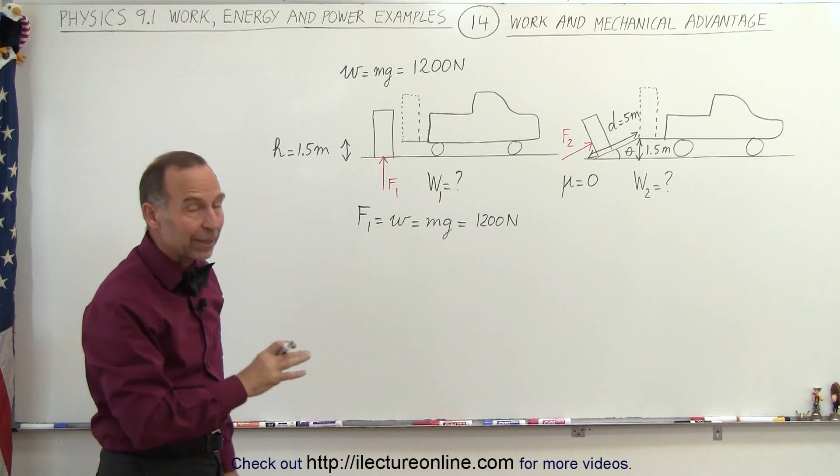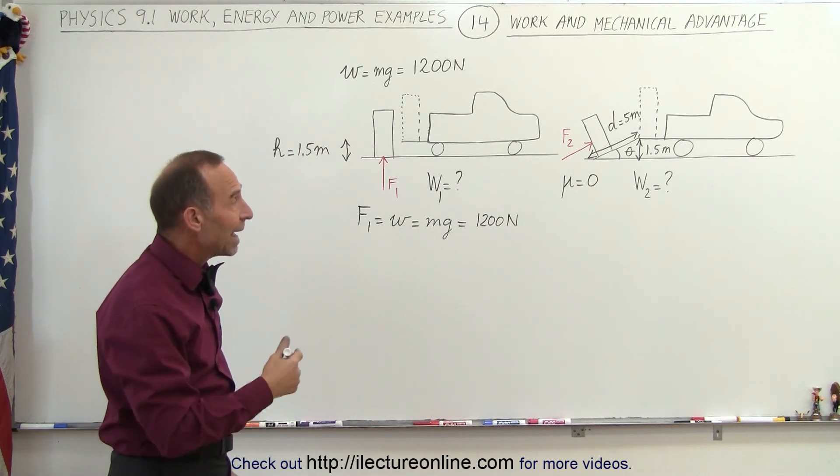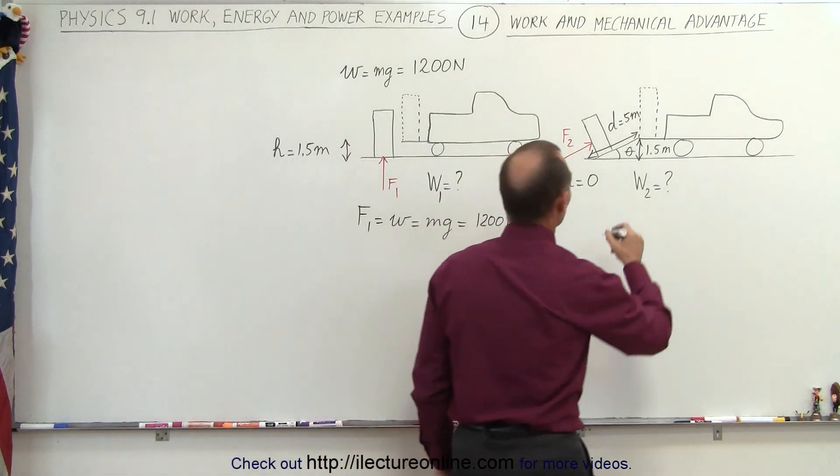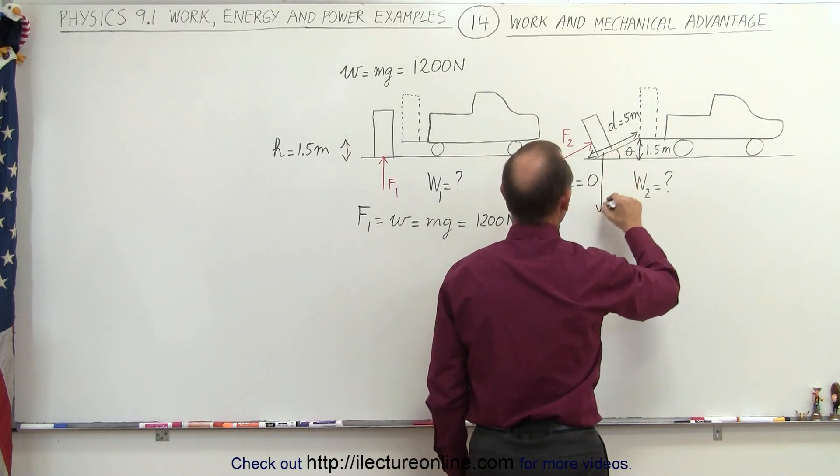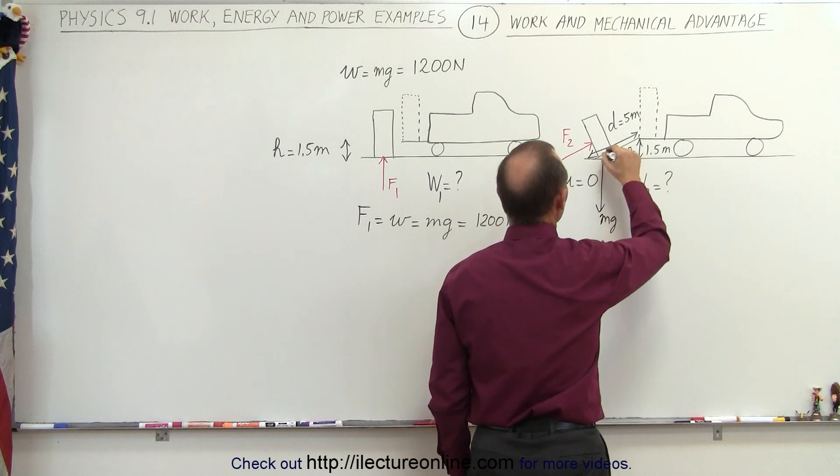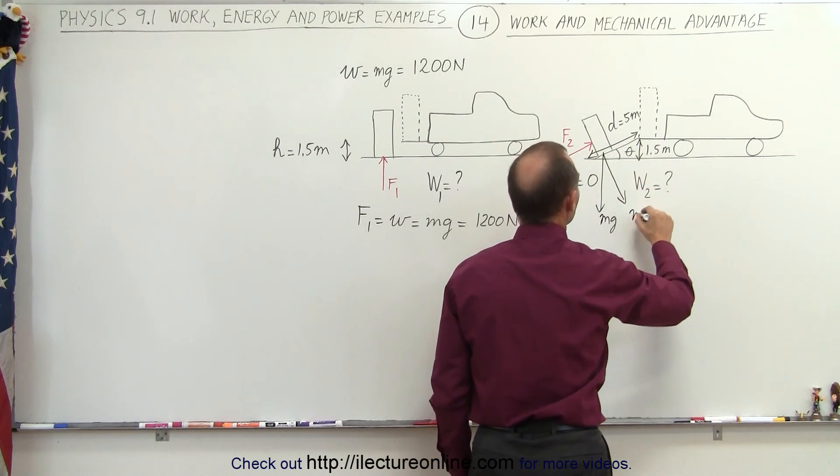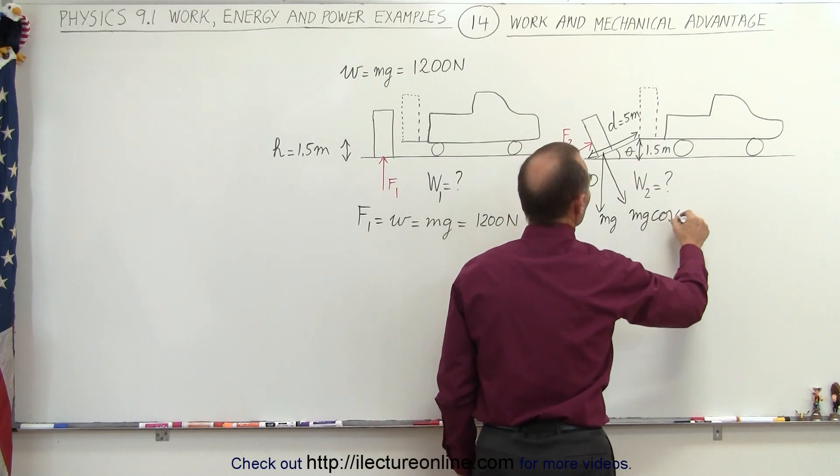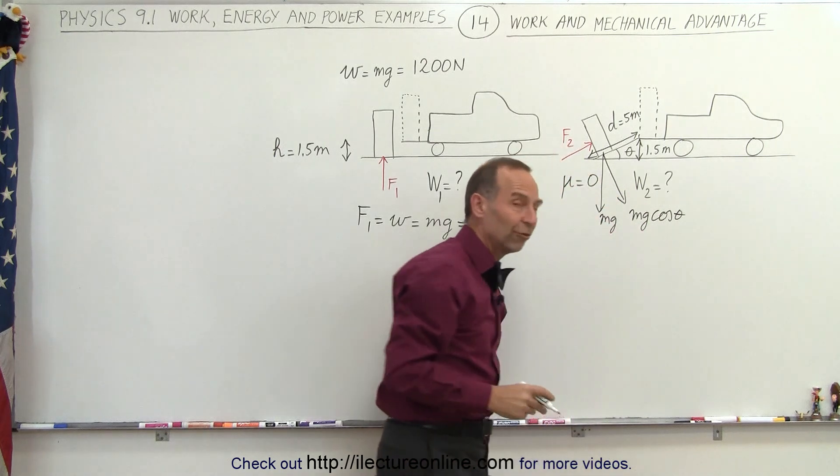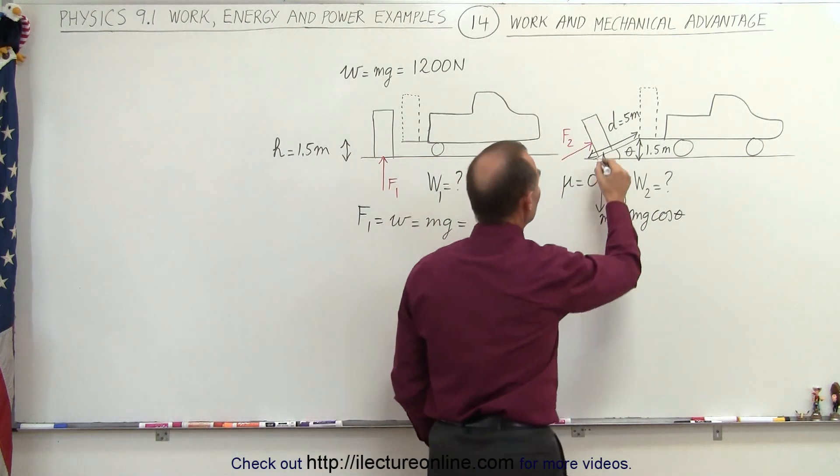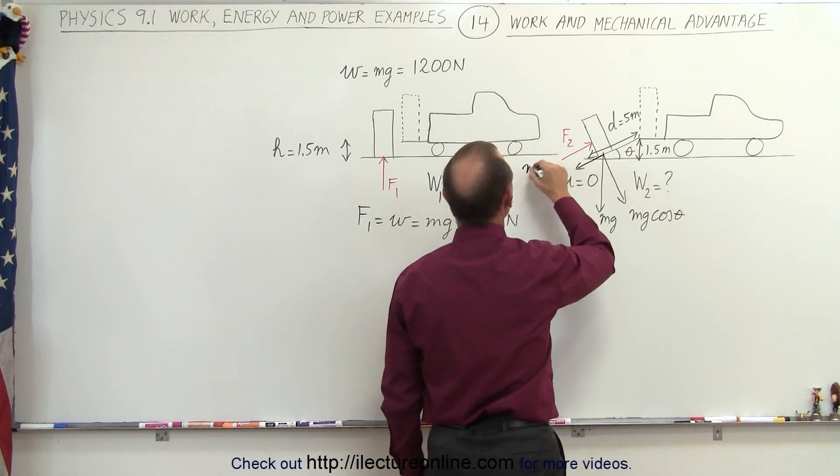Now to push something up an incline we have to find the mg sine theta component. Remember we have the mg coming straight down, we have the mg cosine theta, which of course we're not going to need now because we don't have any friction force to contend with, but we do have the mg sine theta component.